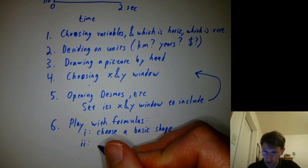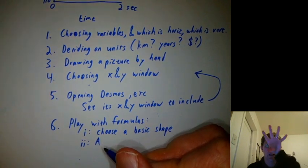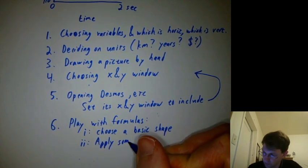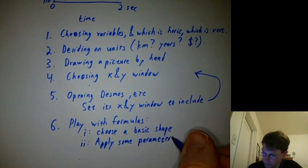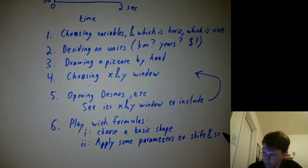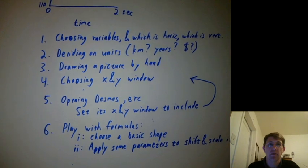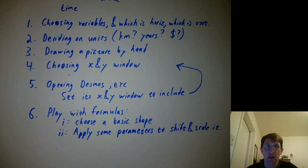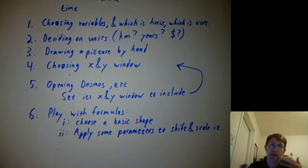Step two, apply some parameters to shift it, scale it, all kinds of stuff. And some of those parameters we choose based on theoretical decisions and we can be very precise about them. And other parameters we just kind of have to play with. So you just try stuff until it looks good.